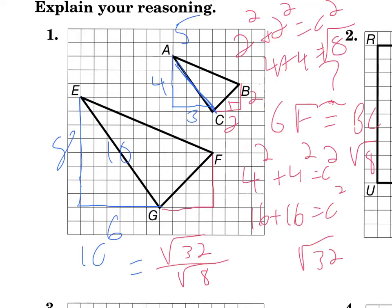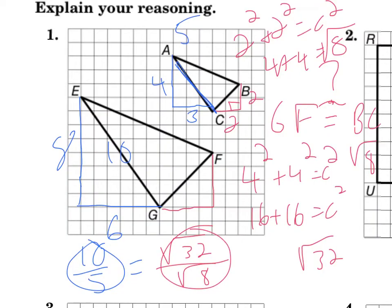10 over 5, does that equal the square root of 32 divided by the square root of 8? Well, we all know that 10 divided by 5 is 2. This answer right here is 2. What is the answer to the square root of 32 divided by the square root of 8? I'm not sure. So you would take out a calculator and you would check that. So if we take out a calculator and check, we get the square root of 32 over the square root of 8 is 2. So those two answers are both 2.